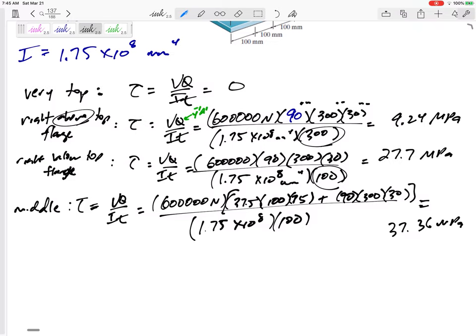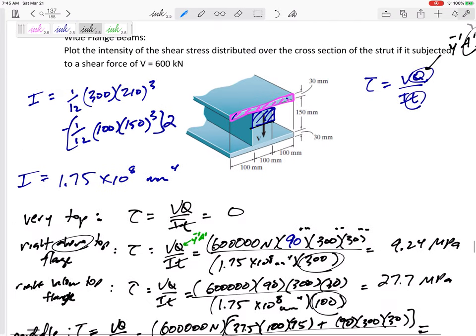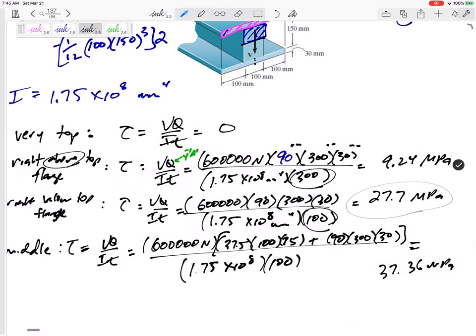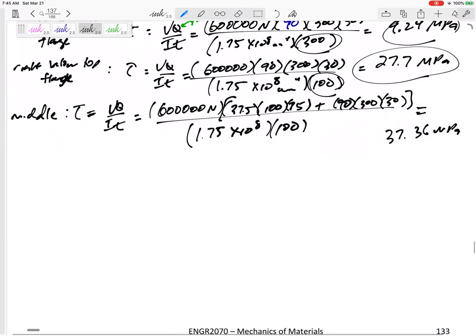Now if I kept on doing this, because the shape is symmetric, the tau would be symmetric. I would get 27.7 down here, 9.24 down there, and 0 of course down there. Alright, so let's kind of plot what this looks like over that shape. So let's look at the very top, very bottom.